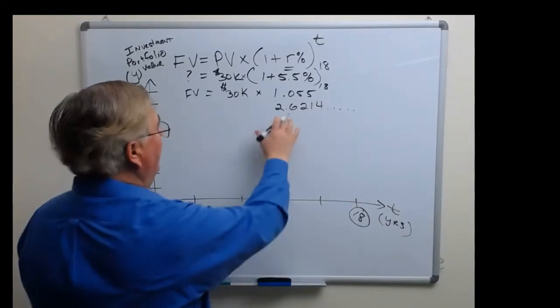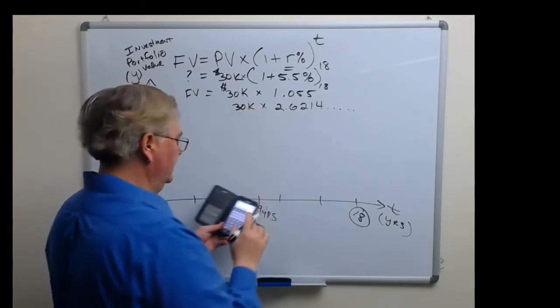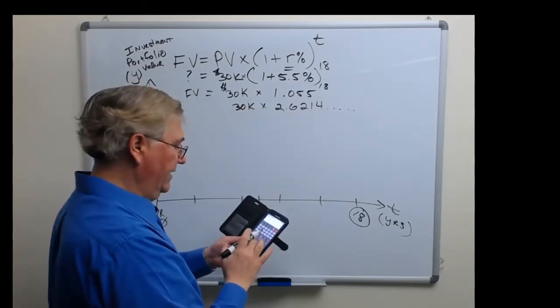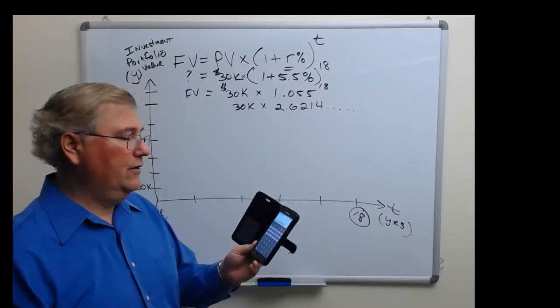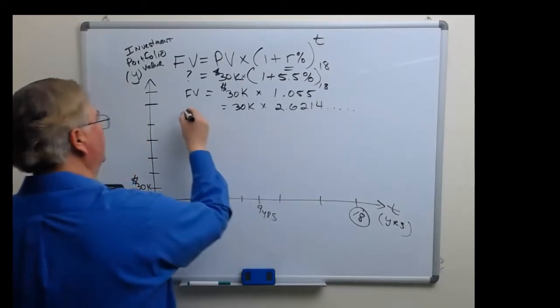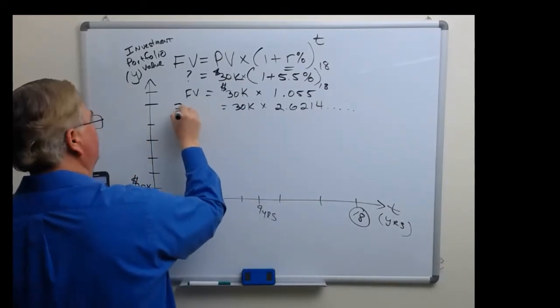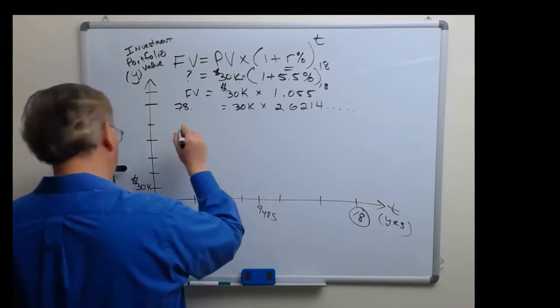Let's multiply that by 30k. You just multiply that by 30 and we get 78.64398k, and that's equal to 78.6439.